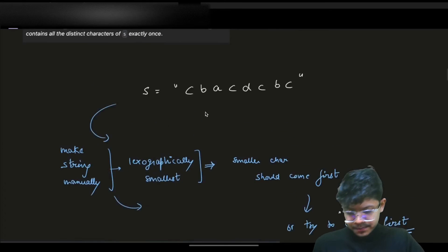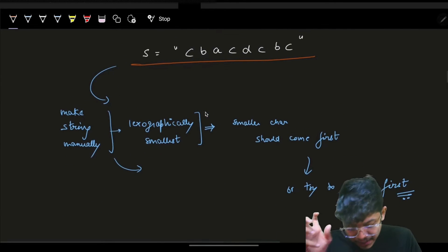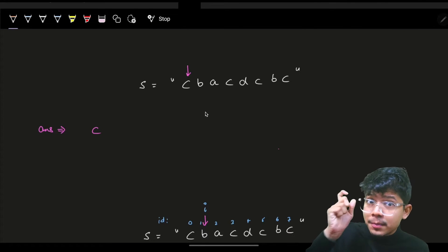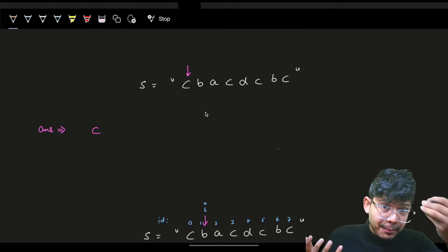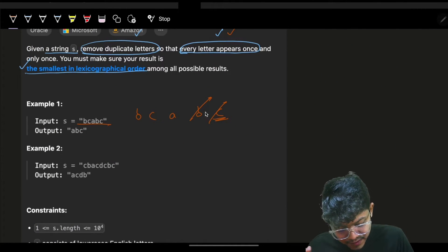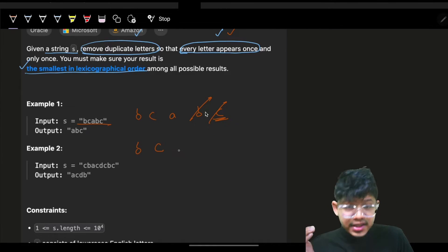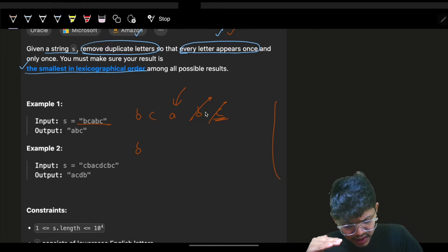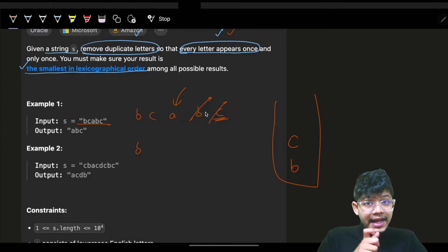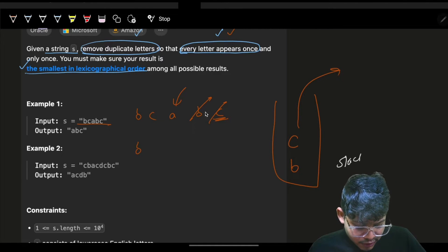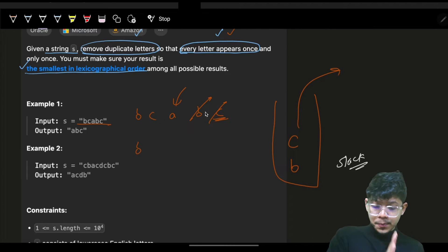The main aim is lexicographically smallest — smaller characters should come first. The operations we performed suggest a data structure where you push elements in, check the top element, and if your condition is satisfied you remove the top element. That is nothing but a stack. A vector also internally works as a stack, so you can use either.